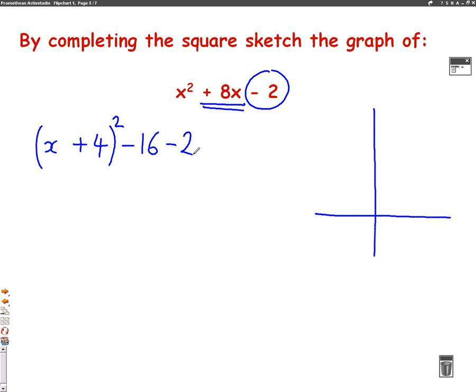All I've got to do now to finish completing the square is simplify that. So, that will be x plus 4 squared. And minus 16 minus 2 will give us minus 18. So, this is completed the square. And if you're a bit confused on how I did that, you need to watch the lesson 1 video.